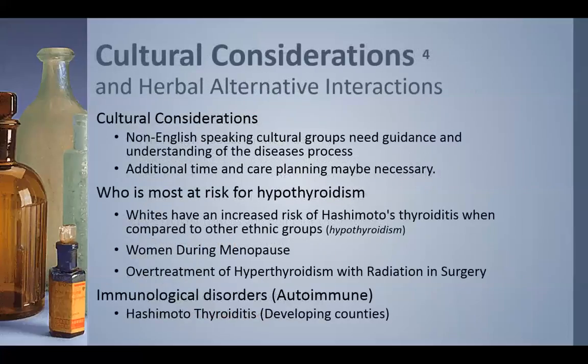Cultural considerations: hypothyroidism is generally found in white females. Non-English-speaking patients need a lot of guidance and understanding; they may need support systems and family assistance in understanding this disease. Those most at risk are white females — Hashimoto's thyroiditis is found predominantly in white females, particularly during menopause — as well as men over age 60, and patients who have been treated for hyperthyroidism with radiation or surgery. Hashimoto's thyroiditis is also the number one reason people in developing countries get hypothyroidism.